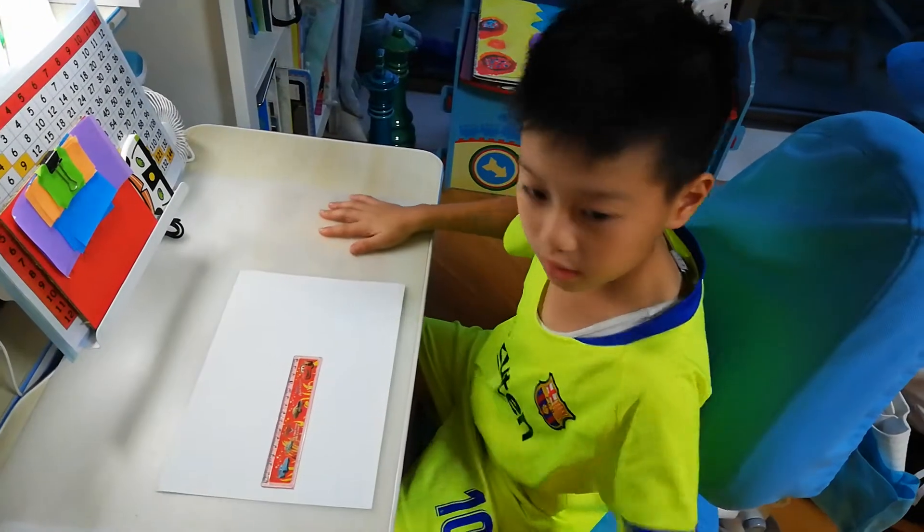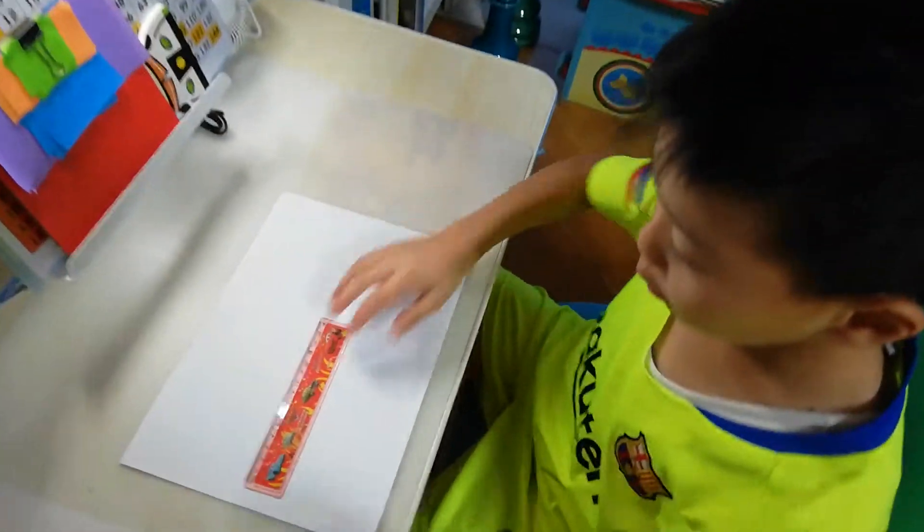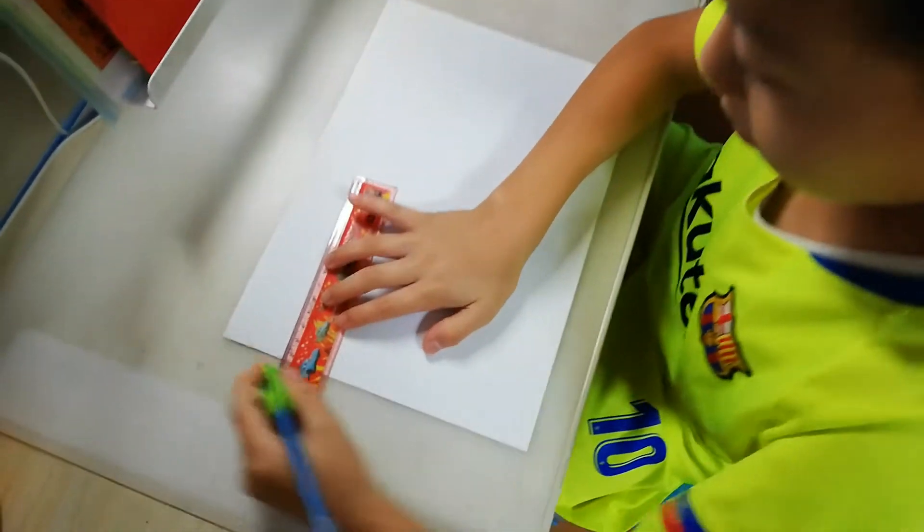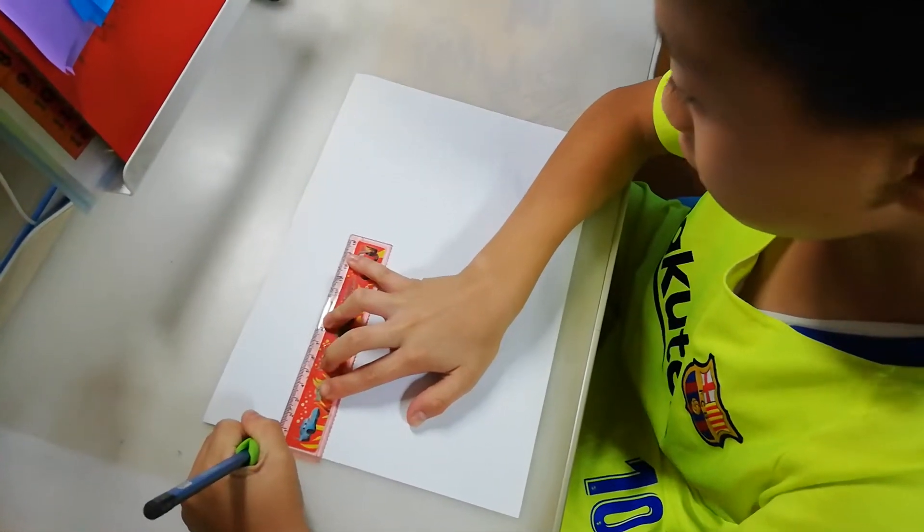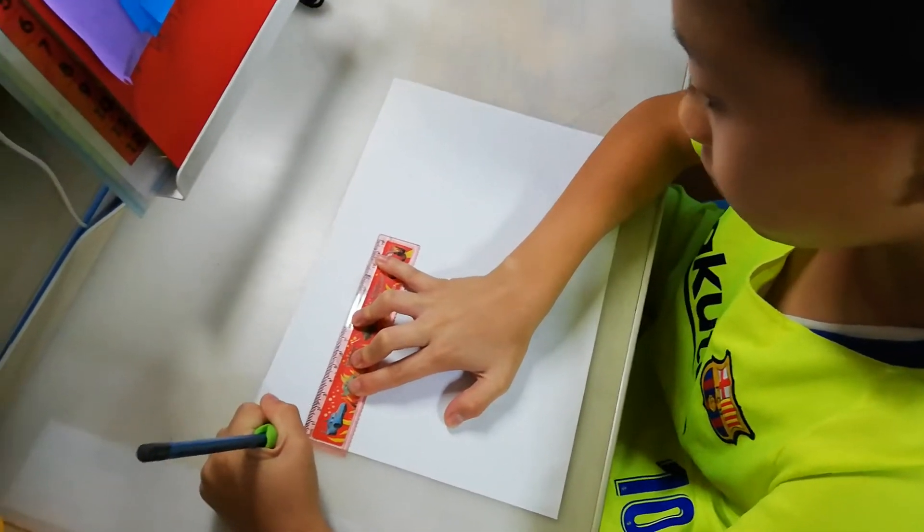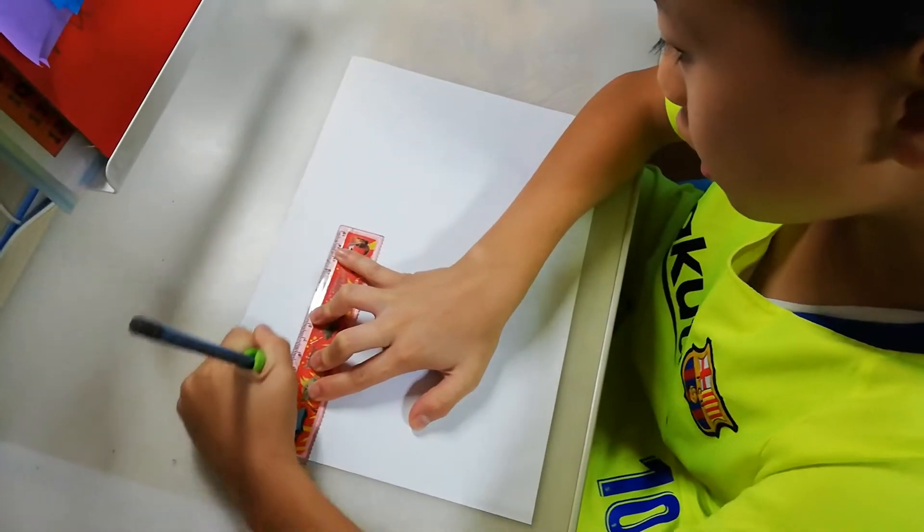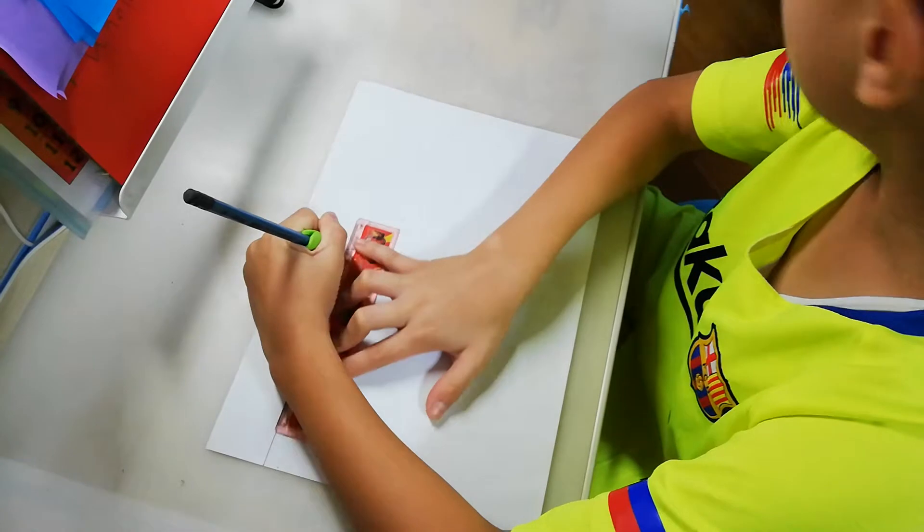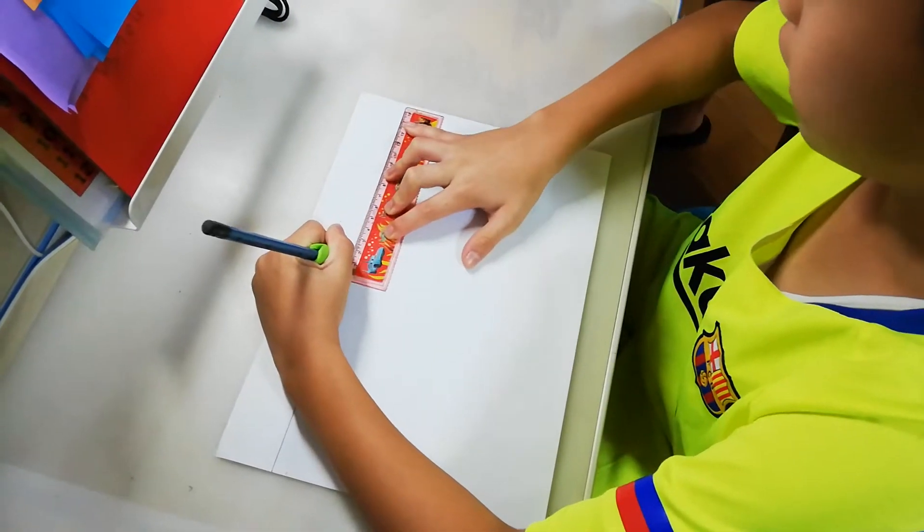First, we have to draw a line a bit more at the top. A big, big line. Here, maybe here. So, draw a big line all the way to the end.